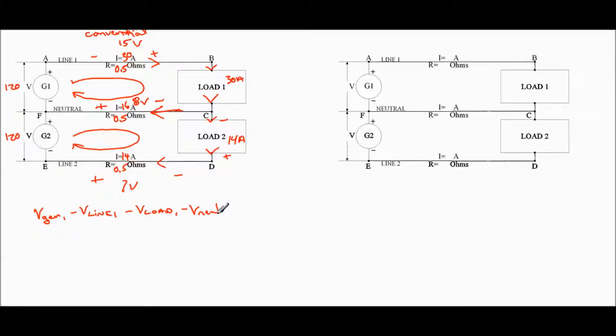So the voltage at the neutral. And we know in a closed loop, the sum of the voltage rises and the voltage drops equal 0. So if that's the case, we can find V load 1, which is V gen 1, minus V line 1, minus V neutral, equals V load 1. So we brought this one over to this side to find our, that's the one we're looking for right up here.